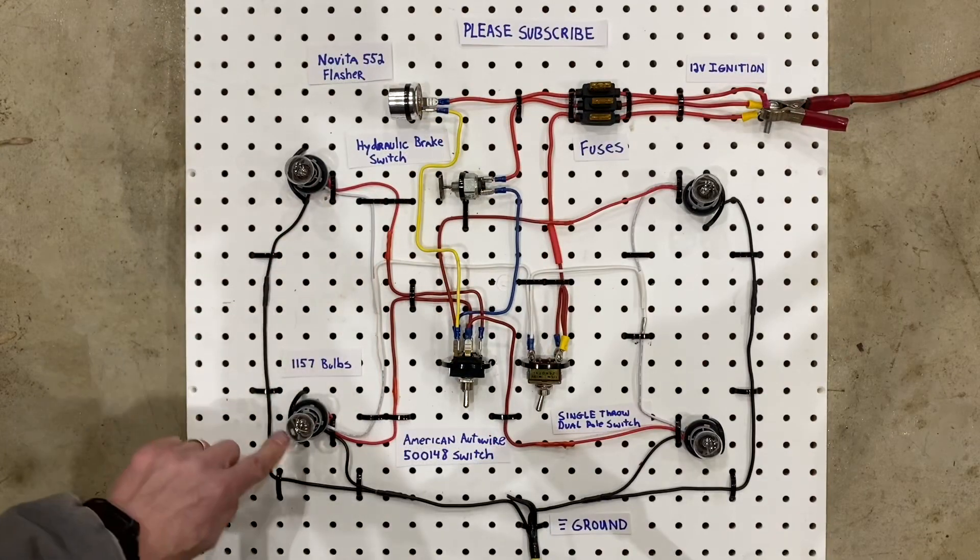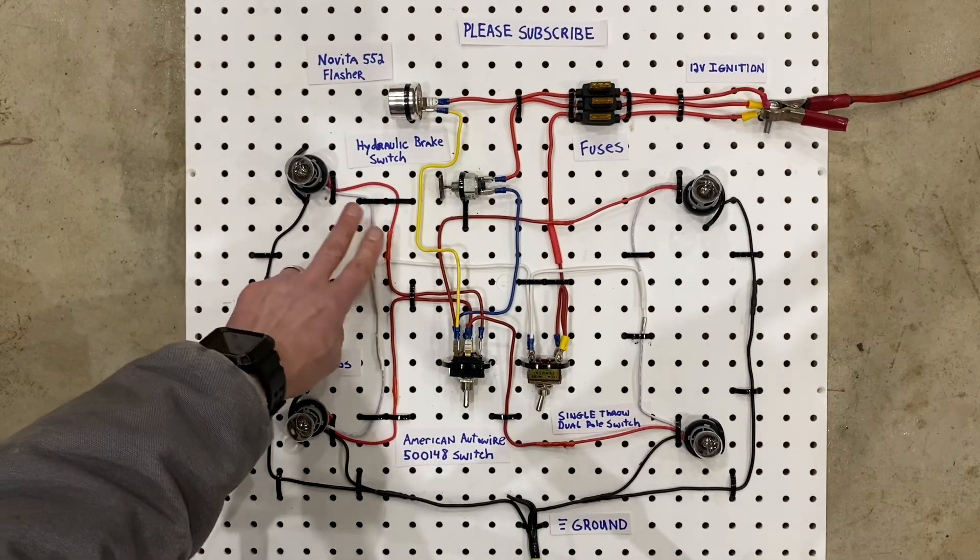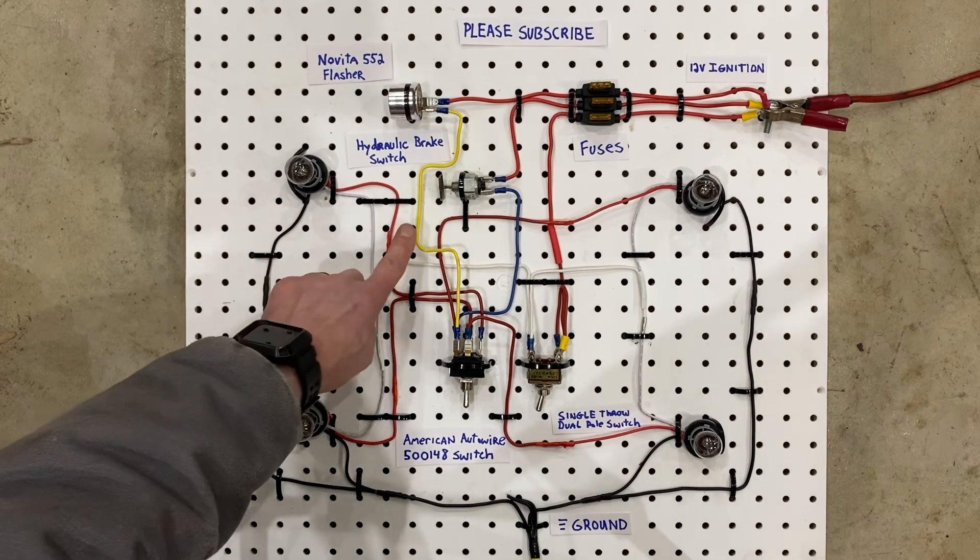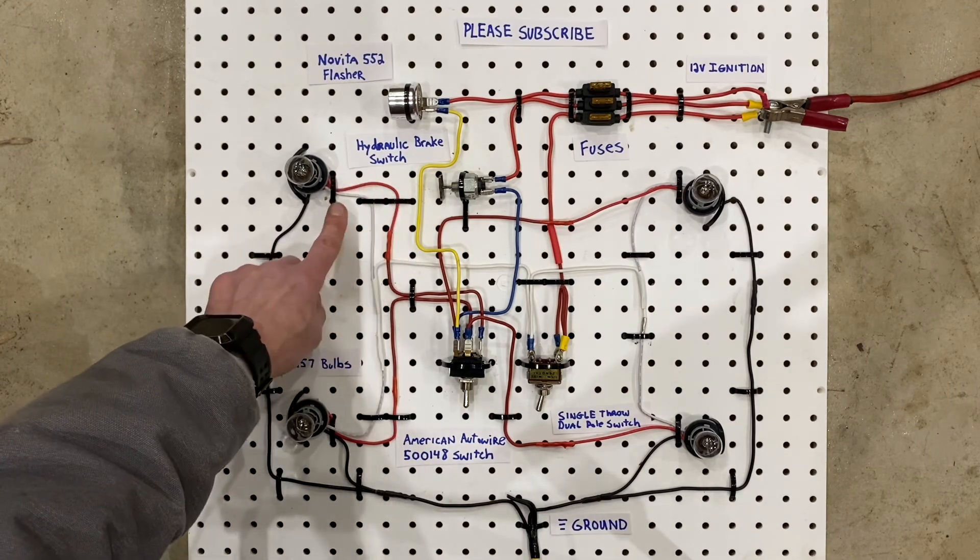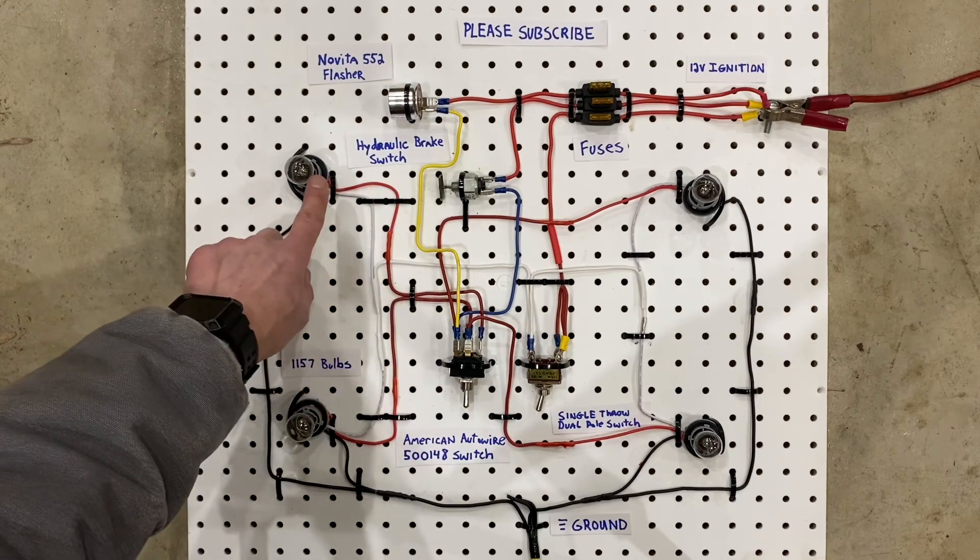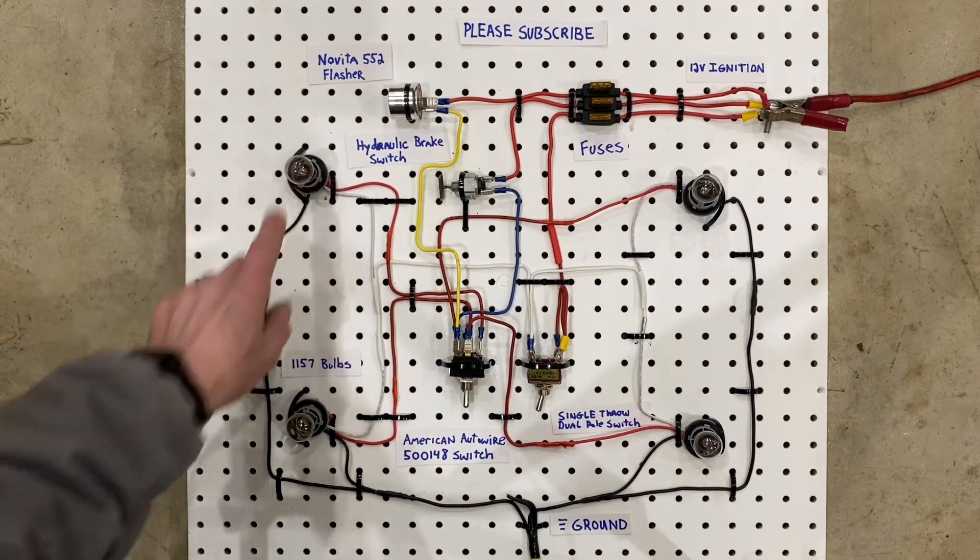You'll notice that each 1157 bulb socket has three wires going into it. There's a ground wire for each one, and then the red and the white are power inputs for each filament. The red wire goes to one filament, the white wire goes to another filament.